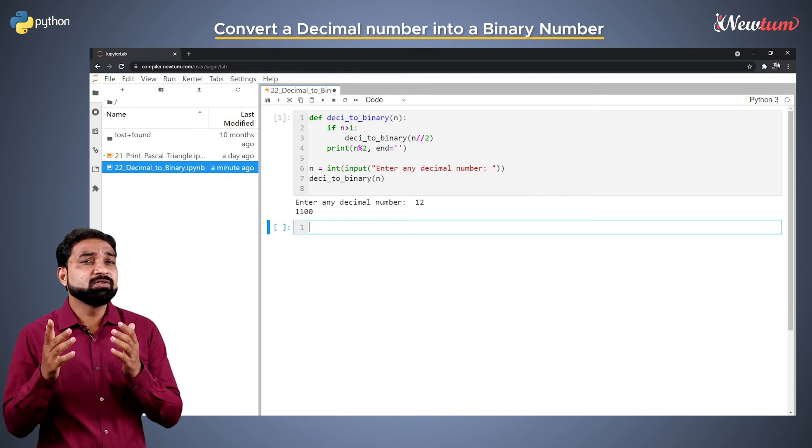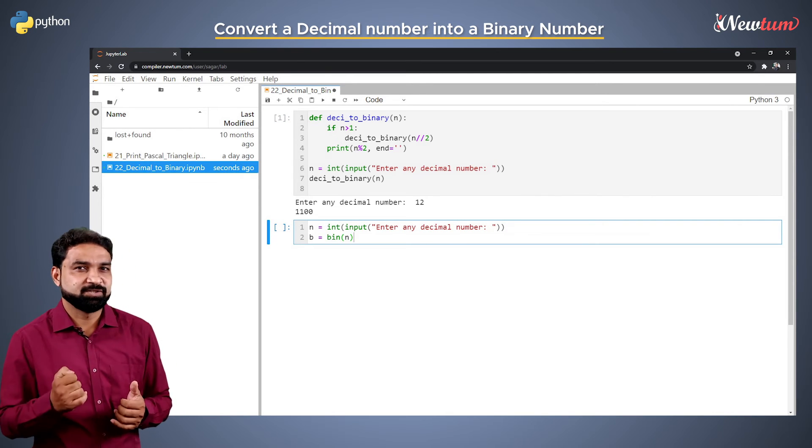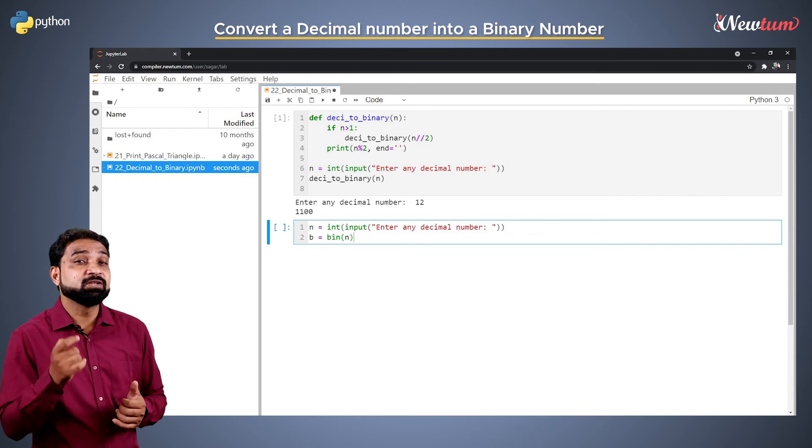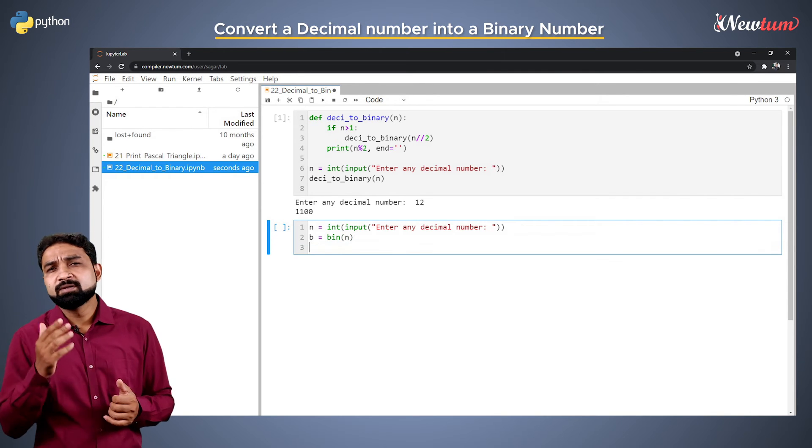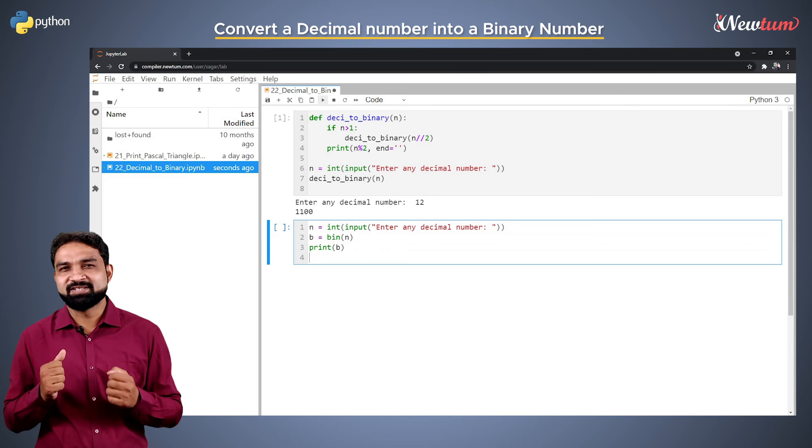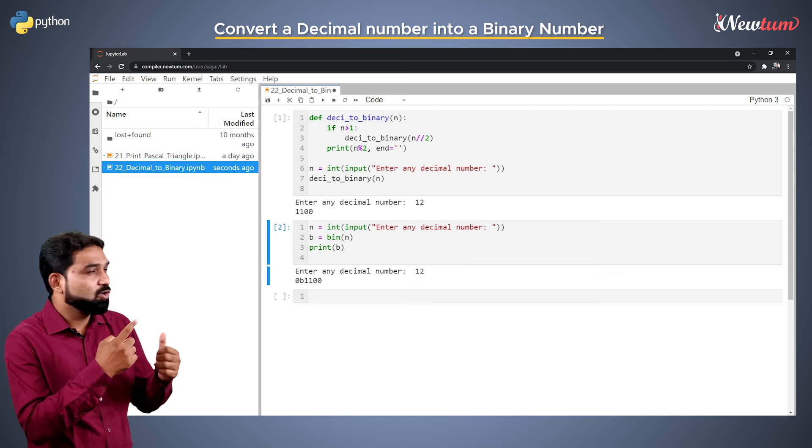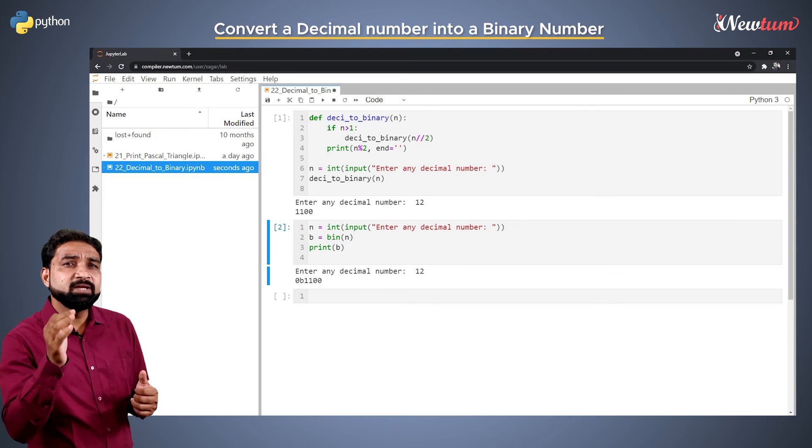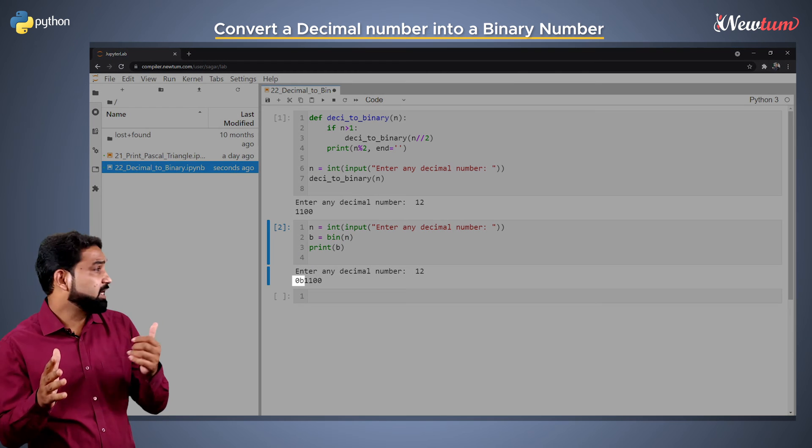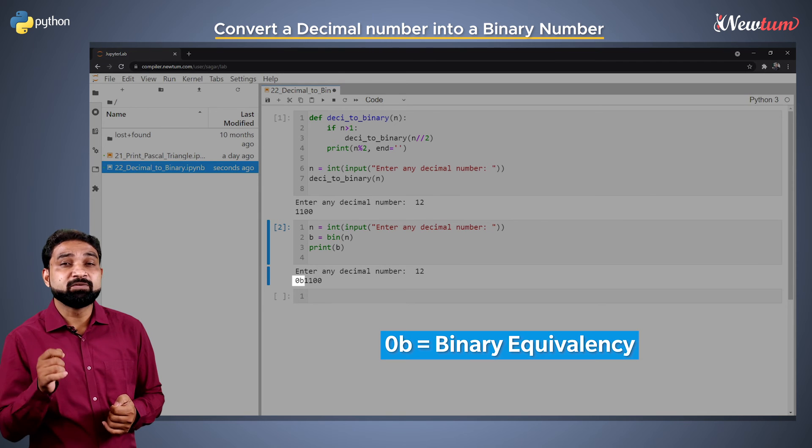Just accept the input in the variable n. Then call the bin function and store the result in the variable b. Then print the variable b like this. It is so easy. Run the code and enter the value 12. Well, we got the output but here we have an additional character that is 0b. 0b means binary equivalency.